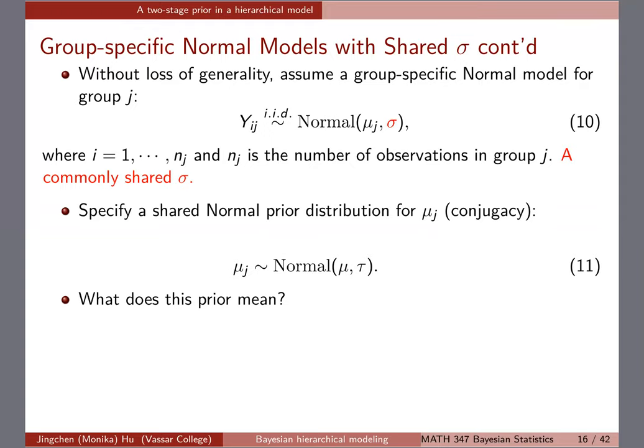What does this prior mean? The mu_j's — mu_1, mu_2, mu_3, mu_4 for our four schedules — are random; they are the parameters in the sampling model. We're giving the same prior for all of the means. The mean mu in equation 11 is talking about the average of where we expect the mu_j's to be, and tau, the standard deviation, gives us a sense of how widely spread all of the mu_j's will be. So think about how you should choose mu and tau, and what prior belief that implies.